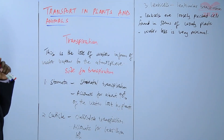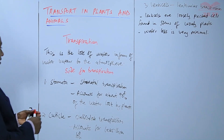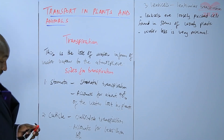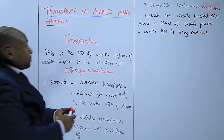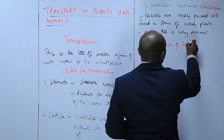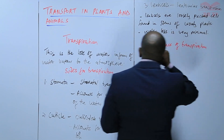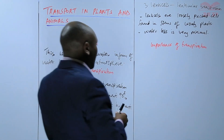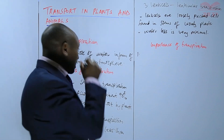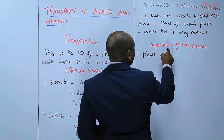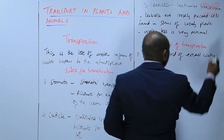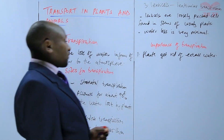Having looked at the three sites for transpiration, it is important to also look at how transpiration is important. The importance of transpiration: one, we know that through transpiration, plants get rid of excess water. So if, for example, a plant is growing in a waterlogged area, it's able to get rid of the excess water.